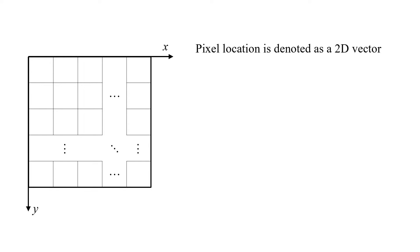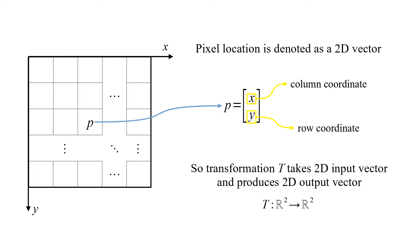Pixel location is denoted as a 2D vector. X is column coordinate and Y is row coordinate. So, transformation T takes 2D input vector and produces 2D output vector.